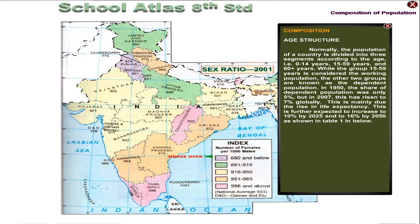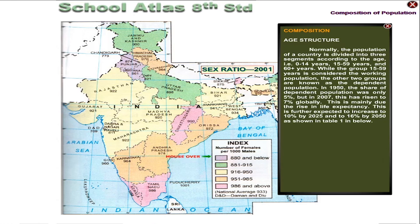Regarding age structure, the population of a country is normally divided into three segments: 0 to 14 years, 15 to 59 years, and 60 plus years. The group 15 to 59 years is considered the working population, while the other two groups are the dependent population. In 1950, the share of dependent population was 5%, but by 2007 it had risen to 7% globally, mainly due to rising life expectancy. It is expected to increase to 10% by 2025 and 16% by 2050.